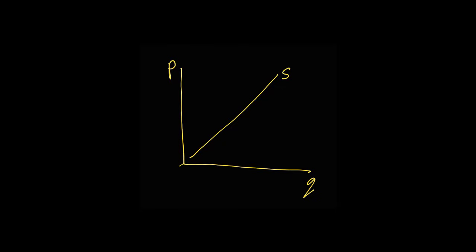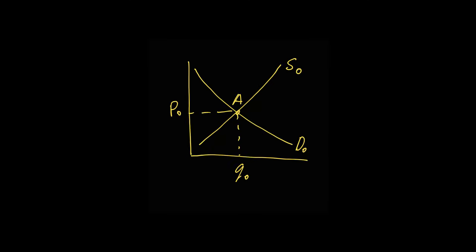So you've got buyers wanting low prices and sellers wanting high prices. Where does the market settle? Right where those two curves cross. That intersection is called market equilibrium. It's the sweet spot where the amount being sold is exactly the amount people want to buy. This gives us our starting point. An initial price, we'll call it P0, and an initial quantity, Q0.